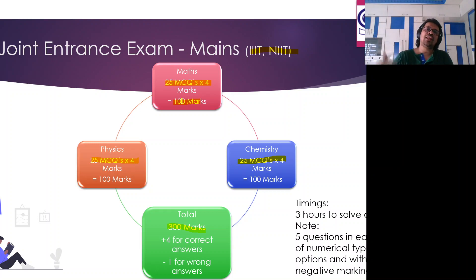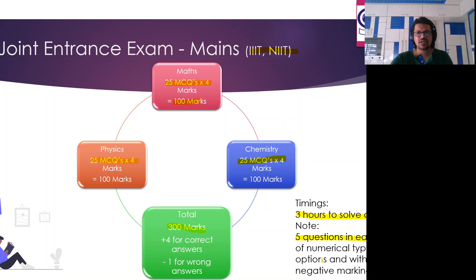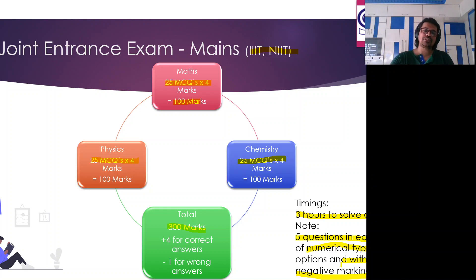For the numerical-type questions there are no options and no negative marking. You get three hours to solve all three subjects. Five questions in each subject are numerical types without negative marking — that's the pattern introduced for 2020. For the JEE Mains percentile, a good score of 95 percentile and above is needed to get into the IIITs and NITs.